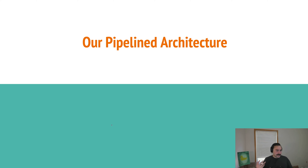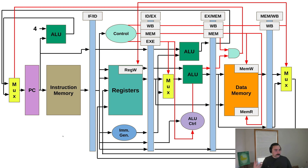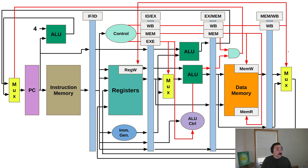Before we get into the basics of how we might implement something like this, let's have a little refresher on our pipeline architecture. This is our pipeline RISC-V architecture that implements a subset of the RISC-V instruction set. We have our five stages: instruction fetch, decode, execute, memory, and then writeback, where we write back into our register file.